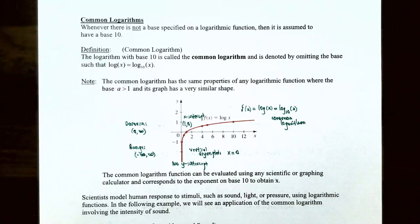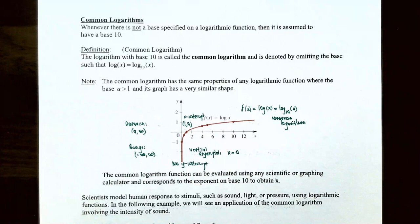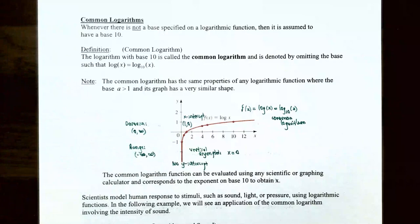The common logarithm has the same properties of any logarithmic function where the base is greater than 1. The domain is zero to infinity, not including zero. The range is from negative infinity to infinity. There is an x-intercept at (1, 0) because log base 10 of 1 equals 0 — it's 10 to the 0 power. The graph also passes through (10, 1). The graph increases without bound as x approaches positive infinity, and has a vertical asymptote at x equals 0.